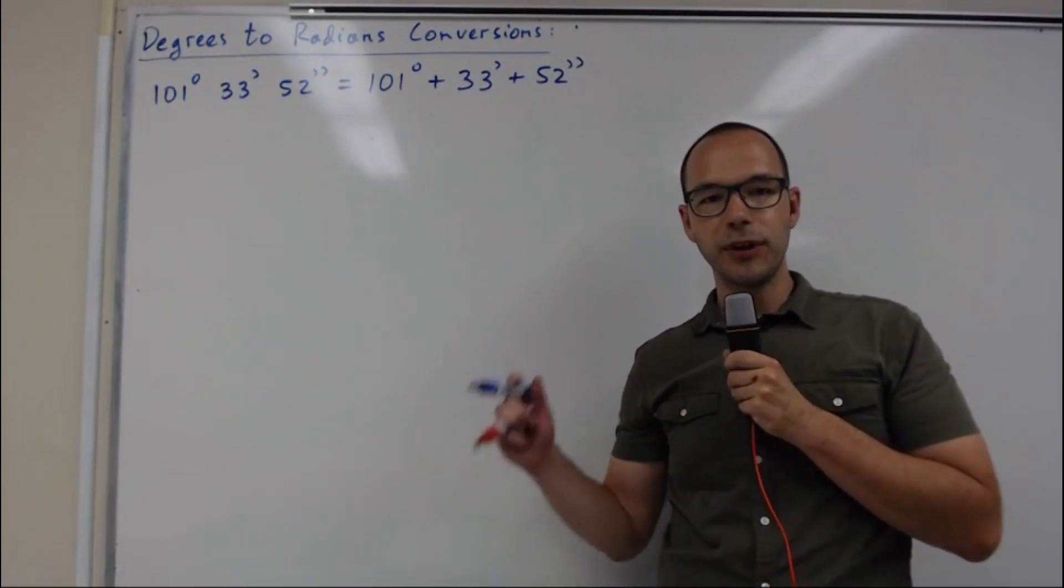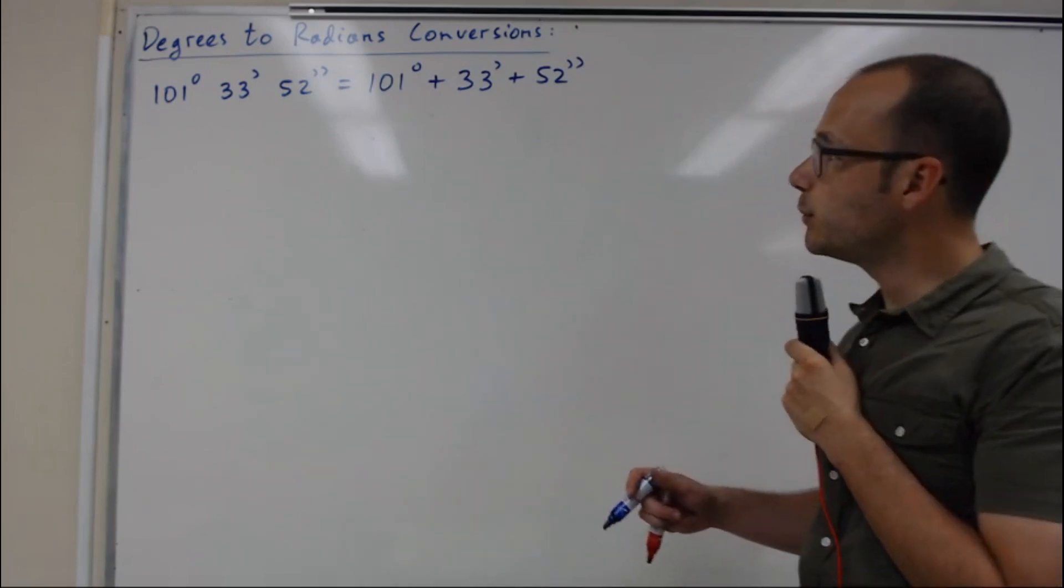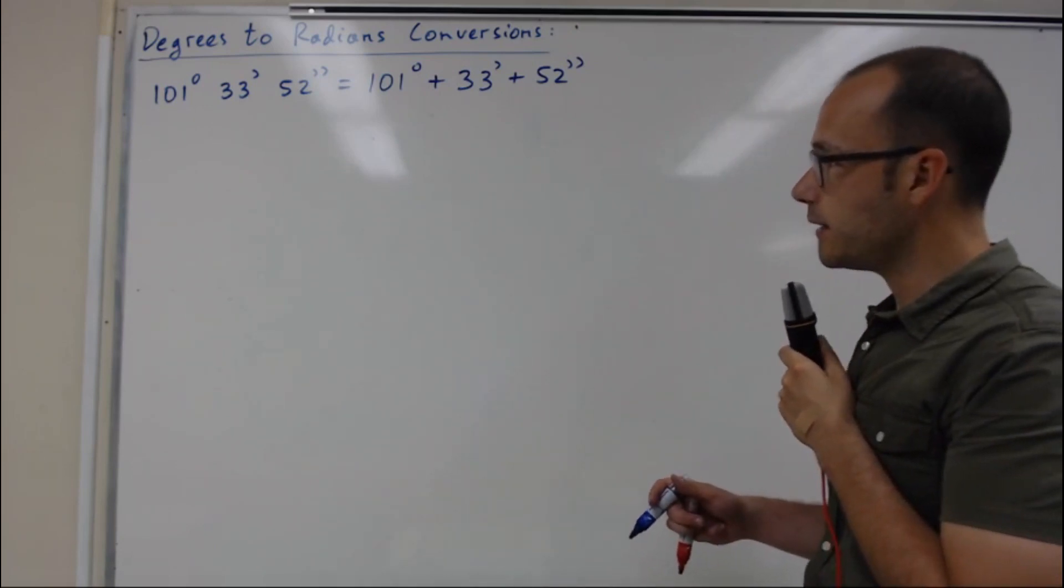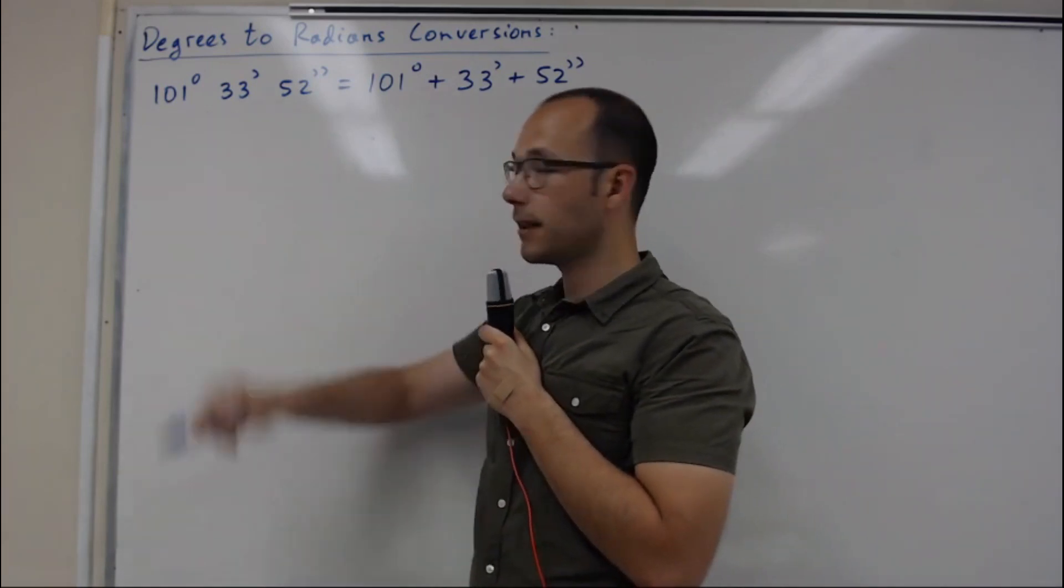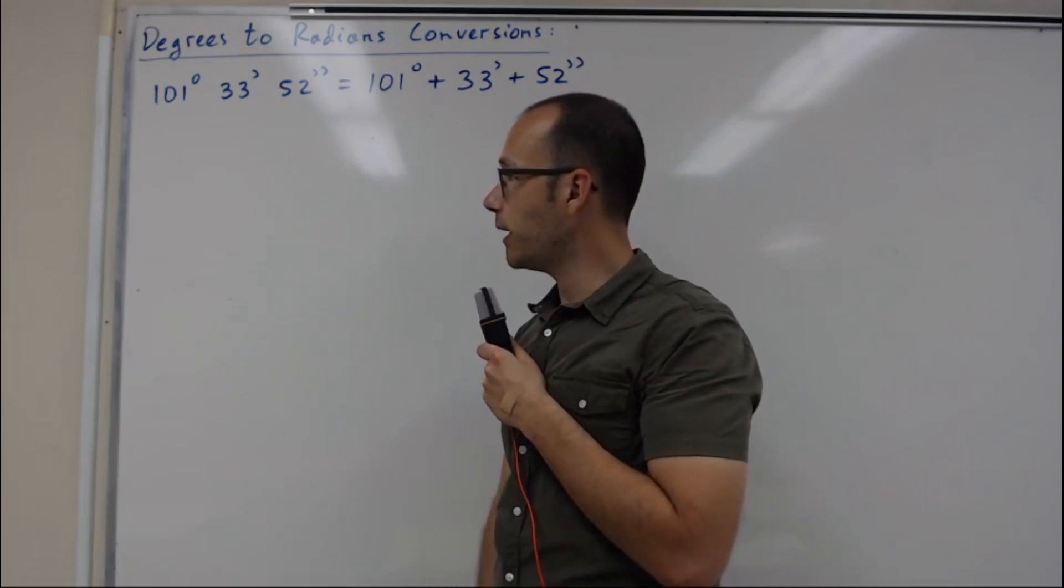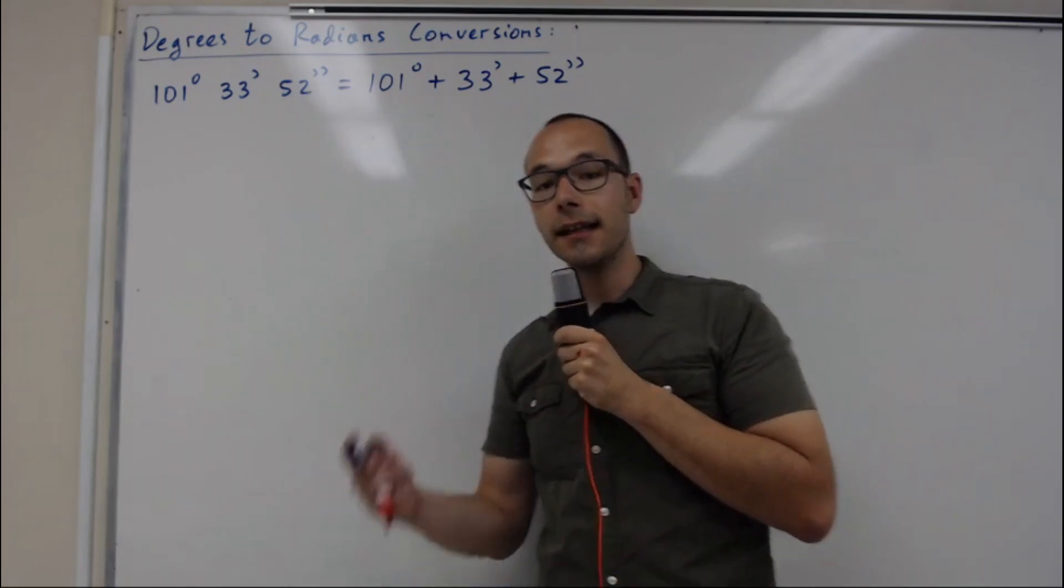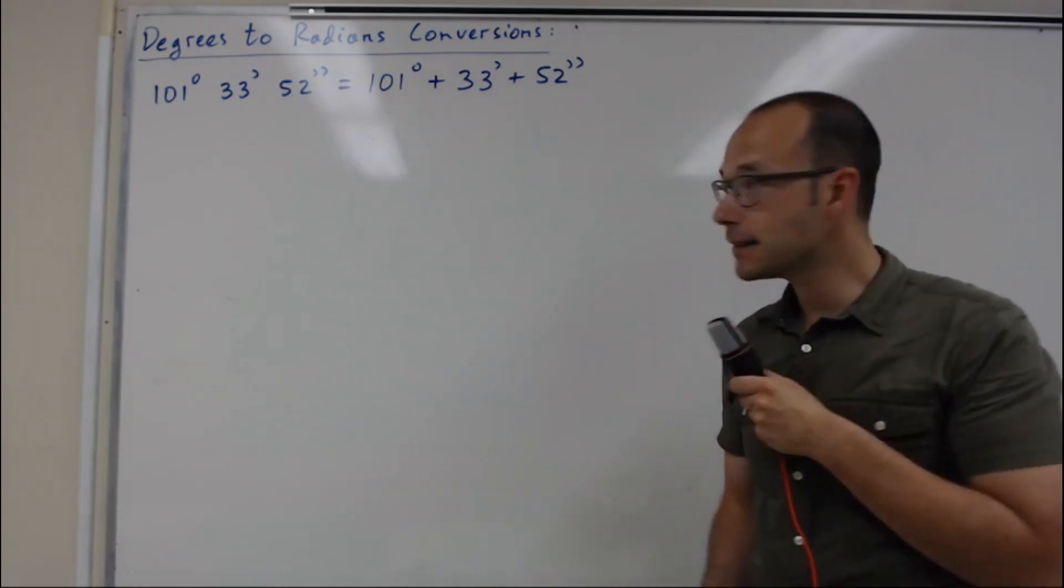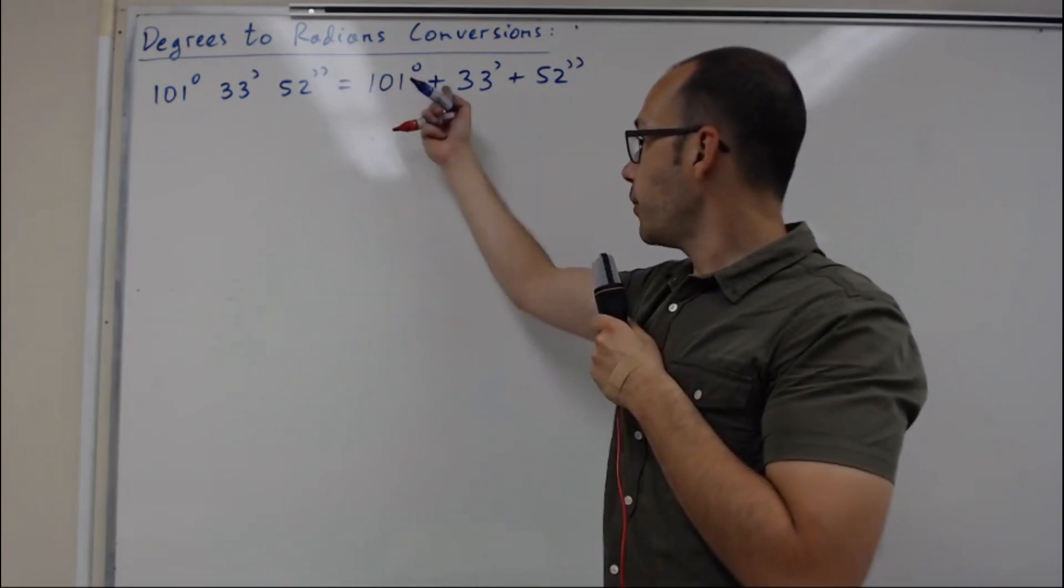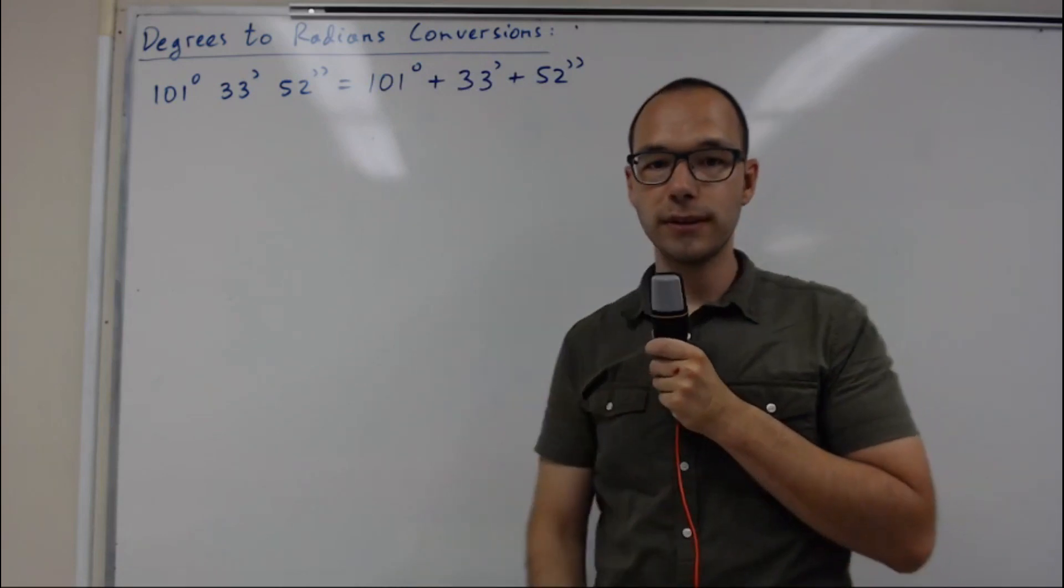Now I'm going to do an example of converting degrees to radians. I start with this angle: 101 degrees 33 minutes and 52 seconds, that we can rewrite as 101 plus 33 minutes plus 52 seconds.